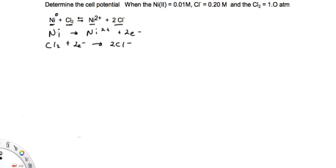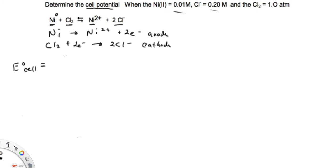We should remember that oxidation happens at the anode and reduction occurs at the cathode. To determine the cell potential, the first thing we need is E⁰ for the cell — that would be under standard conditions, one molar. We're not at one molar, so we'll have to deal with that. But E_cell equals E⁰ cathode minus E⁰ of the anode.